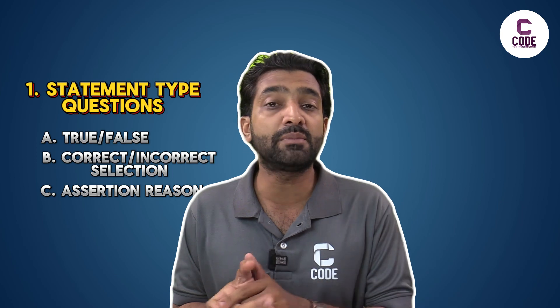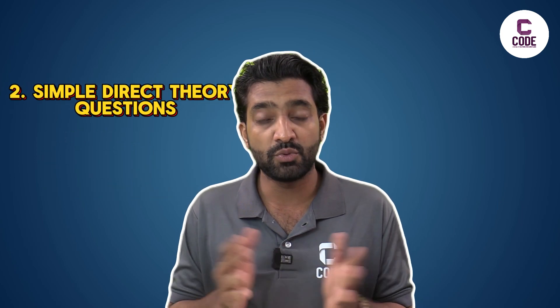What type of questions are simple, direct theory questions? For example, if you have 4 molecules, you will have a Lewis acid character question or an electron identity question. There are 2 simple theory questions.